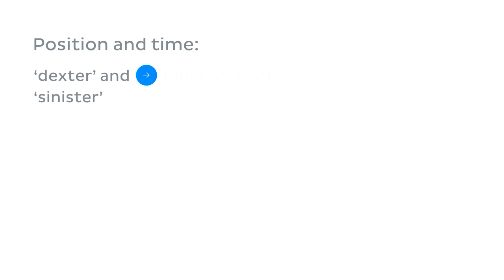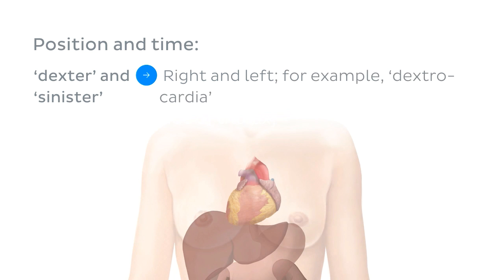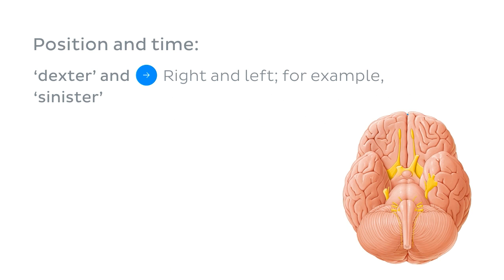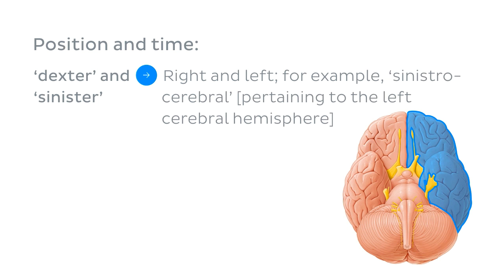The Latin names 'dexter' and 'sinister' refer to the directions right and left and are often found in prefix form when describing position. For instance, dextrocardia — a heart positioned on the right side of the thorax — or sinistrocerebral, pertaining to the left cerebral hemisphere.